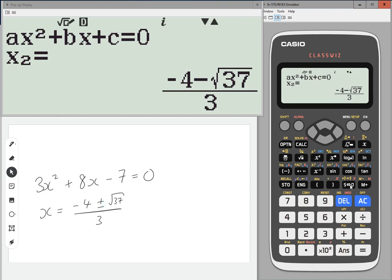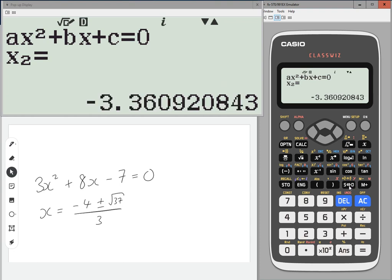And if you wanted to change those into decimal form, you can just press the SD button and then you can see what they look like as decimals.